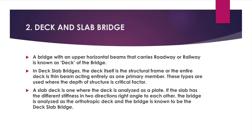A bridge with an upper horizontal beam that carries the roadway or railway is known as the deck of the bridge. In deck slab bridges, the deck itself is the structural frame, or the entire deck is a thin beam acting entirely as one primary member. These types are used where the depth of structure is a critical factor. A slab deck is one where the deck is analyzed as a plate. If the slab has different stiffness in two directions at right angles to each other, the bridge is analyzed as an orthotropic deck and is known as a deck slab bridge.